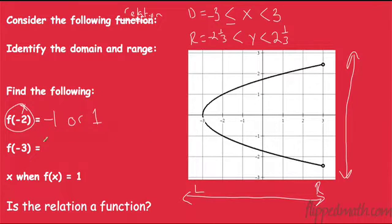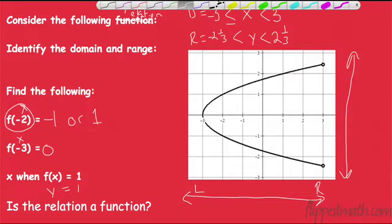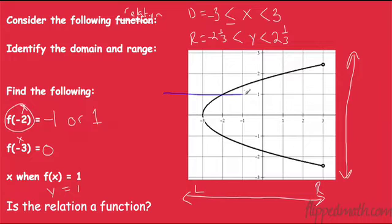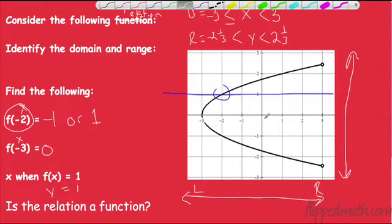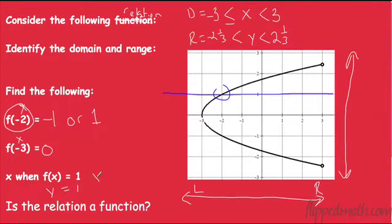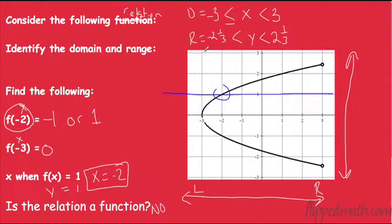When x is negative 3, the only y value is 0. Now this next part asks the opposite: when y equals 1, where does the graph hit that horizontal line? Y equals 1 touches the graph at x equals negative 2. And last question: is the relation a function? If you draw a vertical line, it hits in two places, so no — this is not a function.